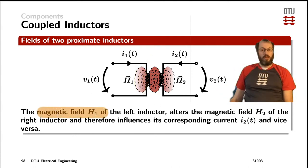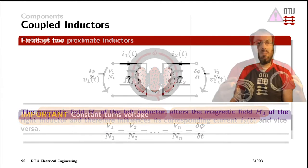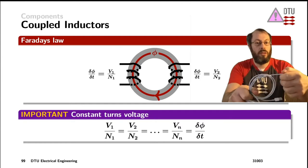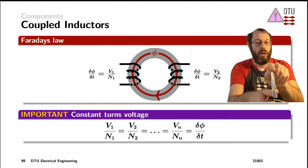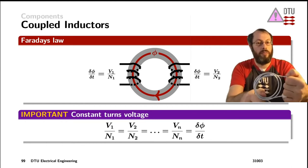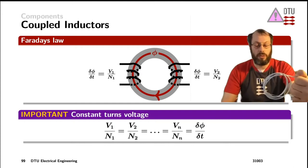Therefore, the magnetic field of one starts to influence the electrical parameters, like the currents and the voltages, in the other. If we use this one as the source connected to a voltage source, we have four windings on that one. So connecting that one to a four volt AC source means we have one volt per turn across that one.